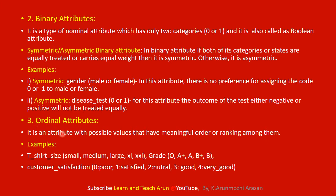Ordinal Attributes have some meaningful order among their values. For example, clothing sizes: small, medium, large, extra-large, double XL — these follow an increasing order. Another example is grades: A+, A, B+, B — these follow a decreasing order. Customer satisfaction ratings such as poor, satisfied, neutral, or very good also follow a meaningful order. Any attribute with a meaningful ranking is an ordinal attribute.